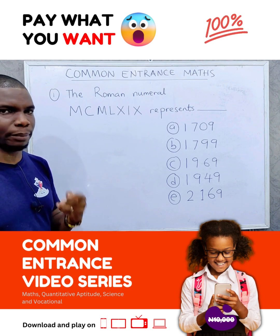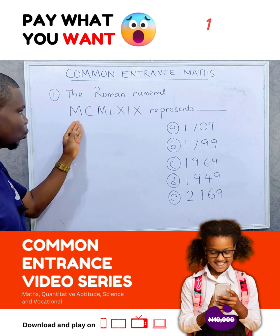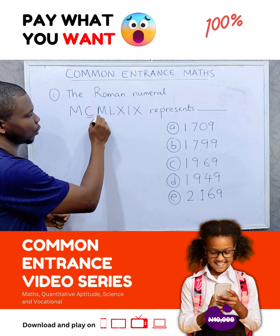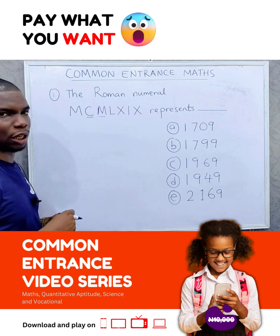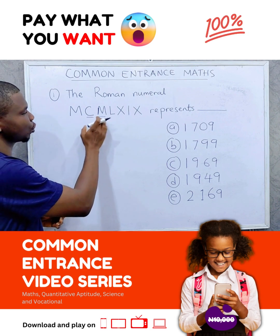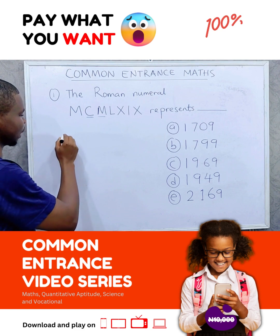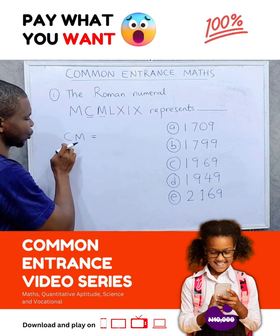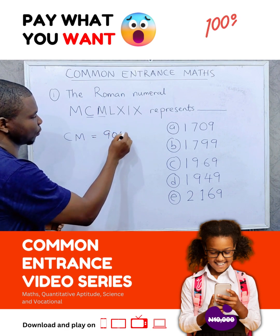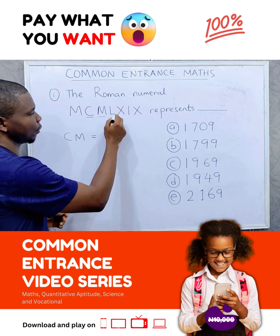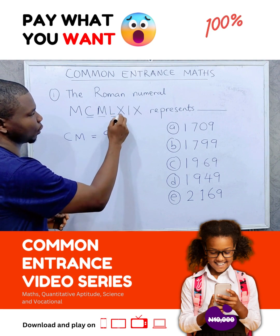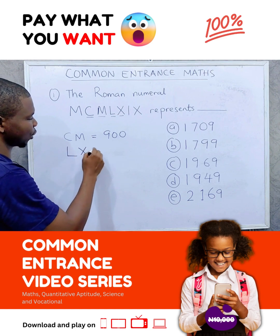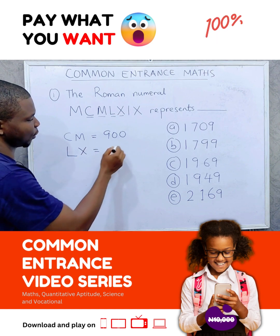There are two things you need to bear in mind when dealing with Roman numerals. If you see a small number before a bigger one, then you subtract the small one from the bigger one. So CM would be 1000 minus 100, which is 900. But when you see a bigger one in front of a small one, then you add. So LX would be 50 plus 10, which is 60.